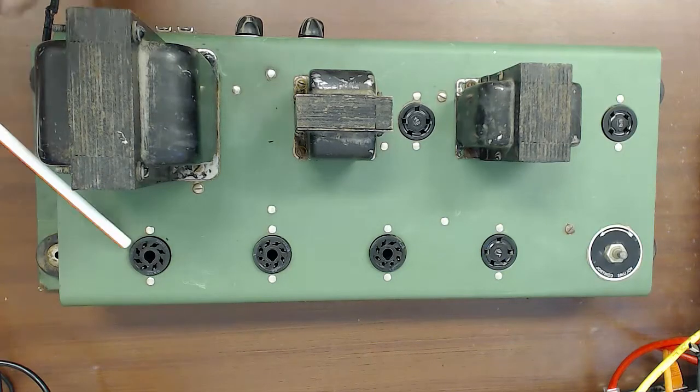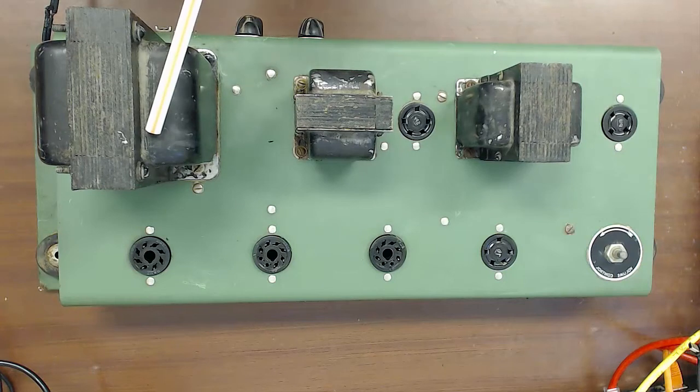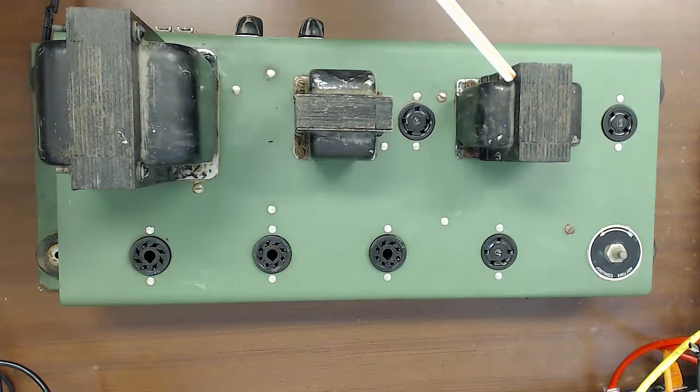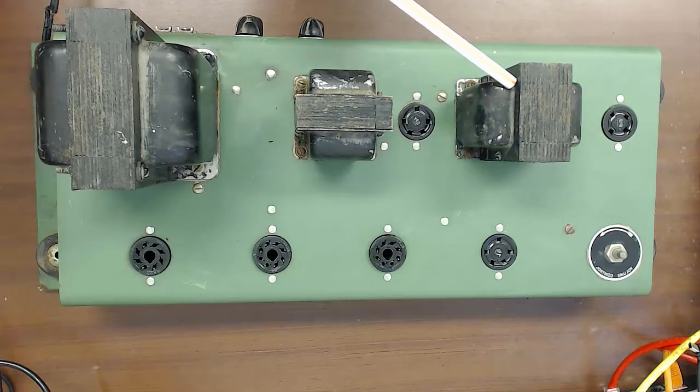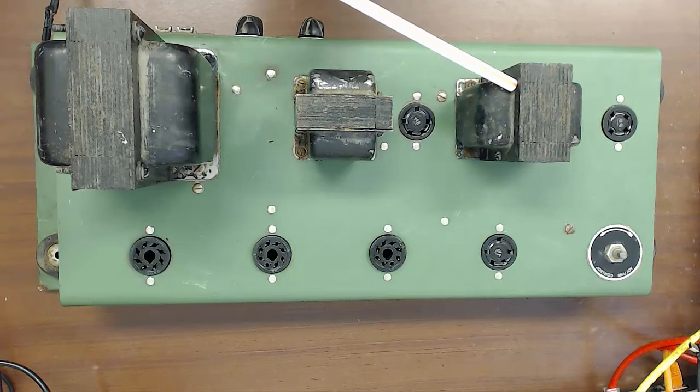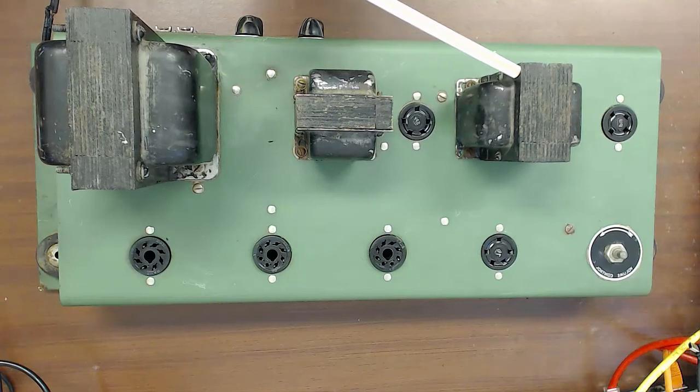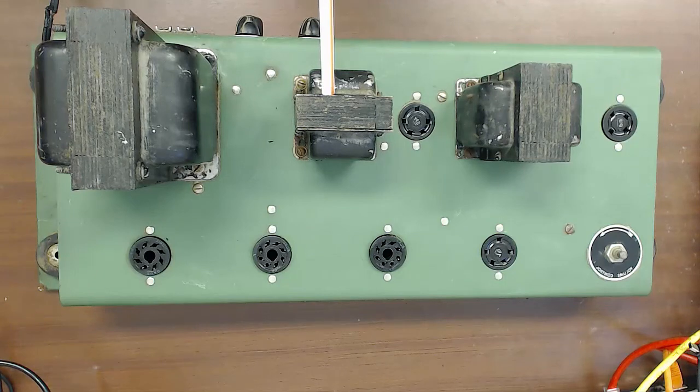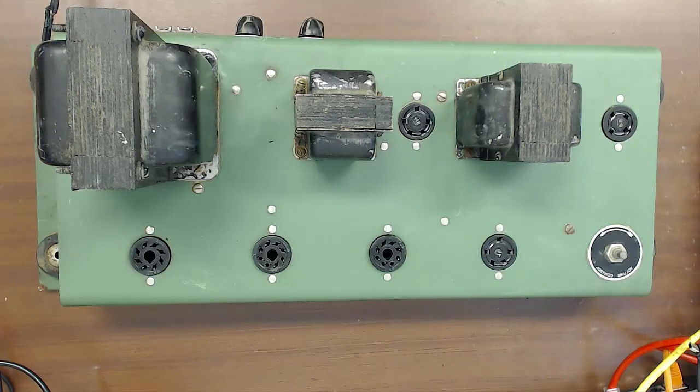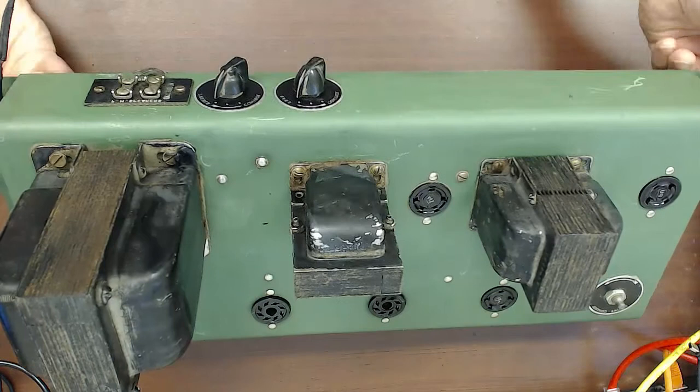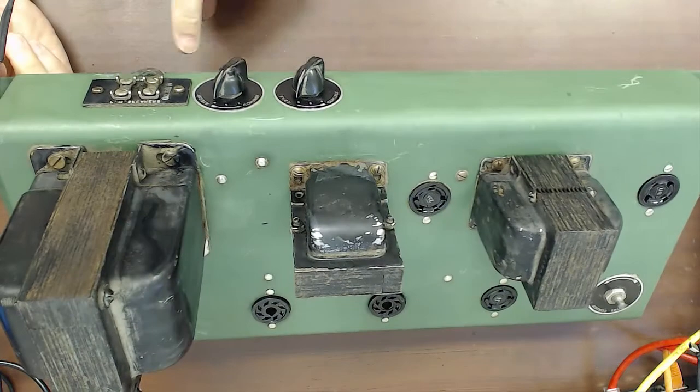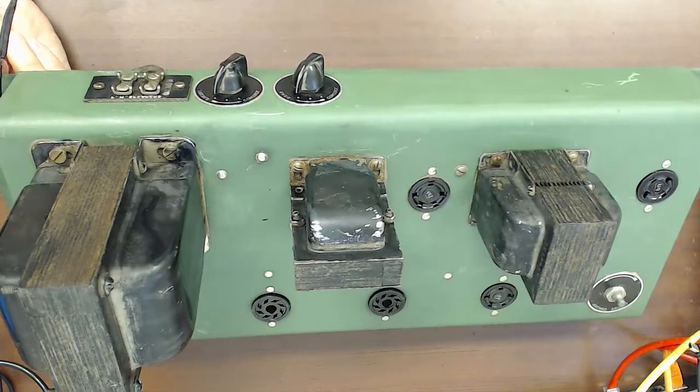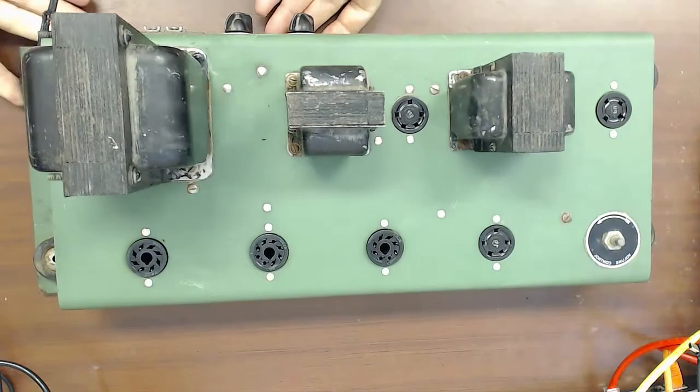This one is the rectifier, this is the main power transformer. This one you can't see it but it says it's the 3297, so that's the output transformer. This one is a 3160, so this is the choke on the power supply.